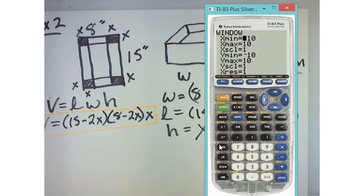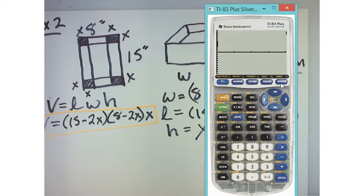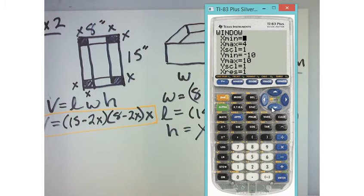But now, on my window, I'm going to change my domain from 0 to 4. And that's all I want to look at. I need to adjust the window a little more, because it looks like the y values are a little bit bigger than I anticipated.